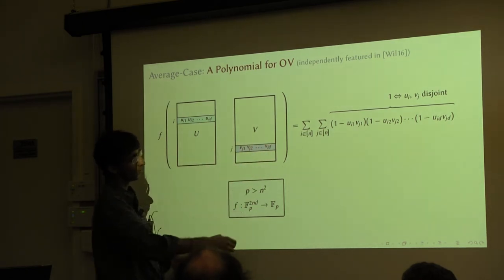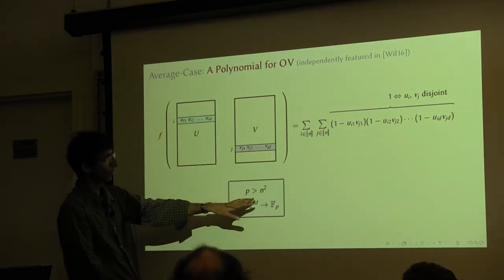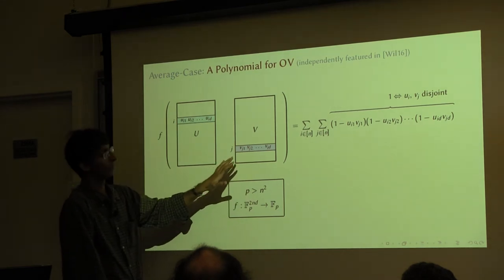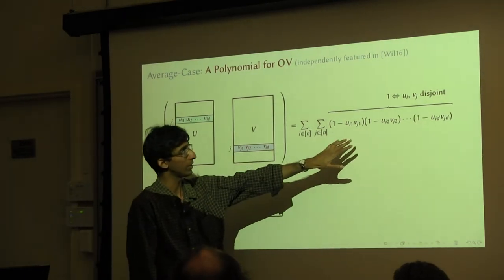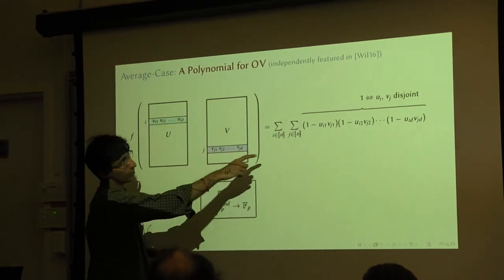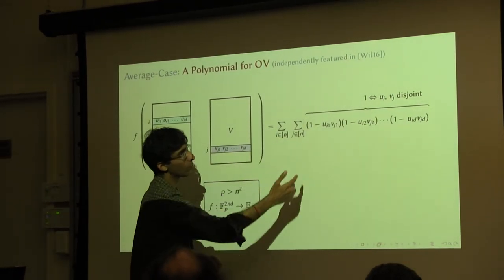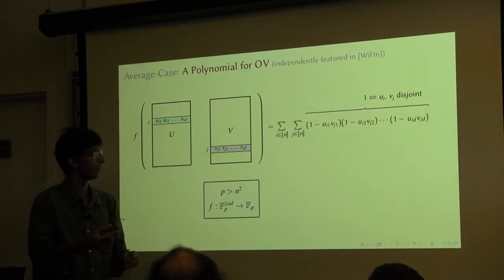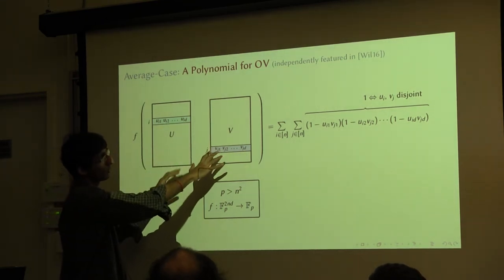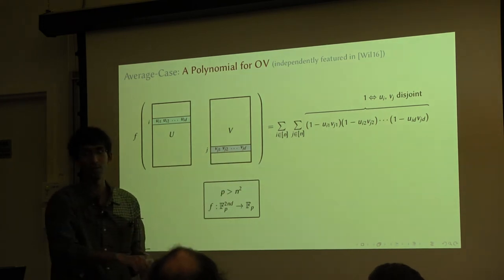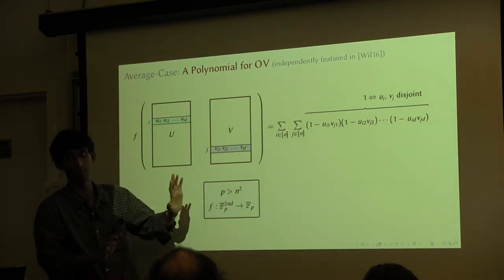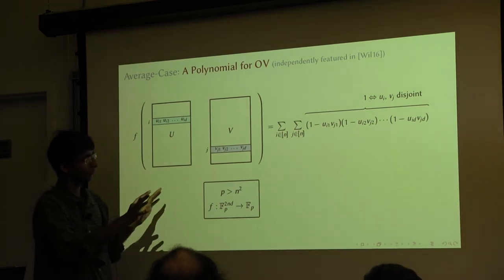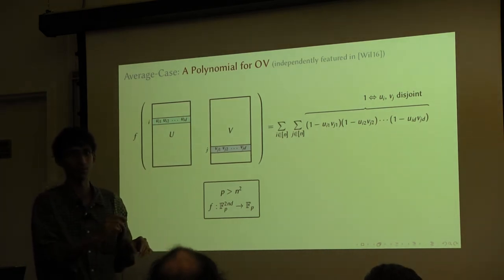Why more than n-squared? It's so that the semantics I stated still make sense. You are adding n-squared terms, each of which is 0 or 1, and you don't want it to wrap around in the field. So as long as p is more than n-squared, the statement is still correct: if I put in a 0-1 input, it tells me the number of pairs of orthogonal vectors. And it's still true that if I can evaluate this, I can solve any instance of orthogonal vectors.